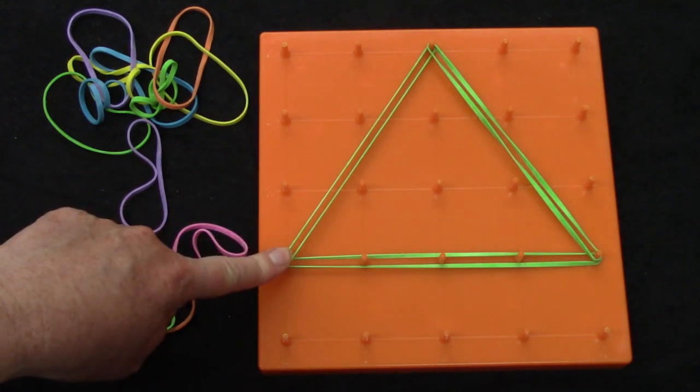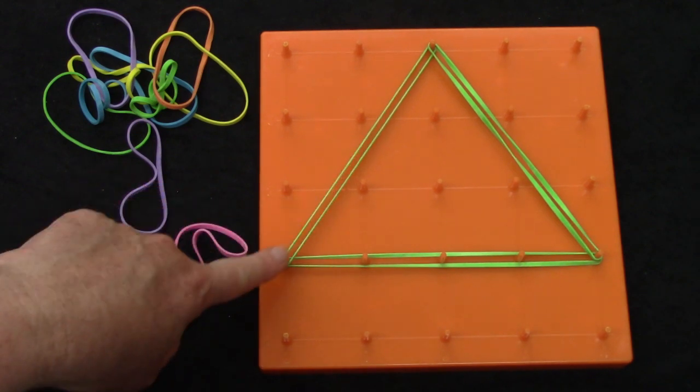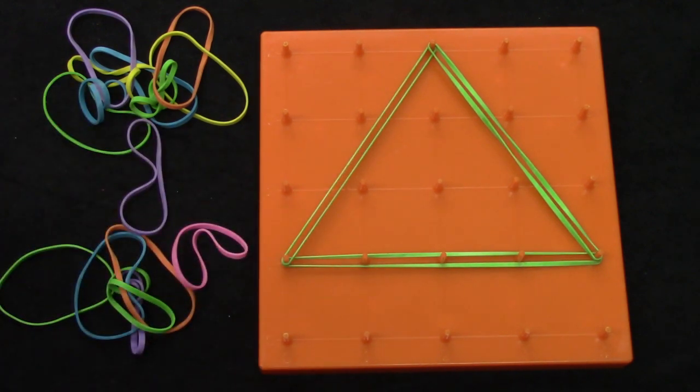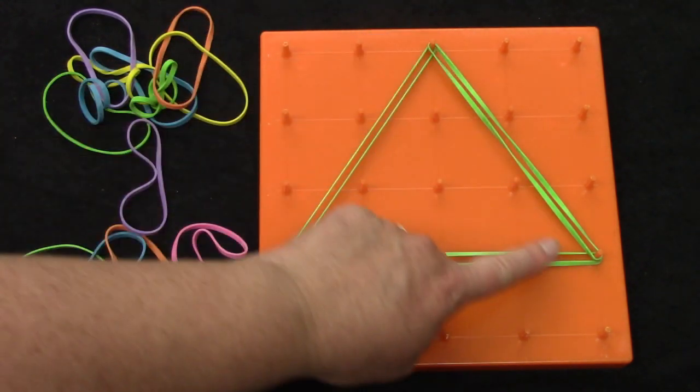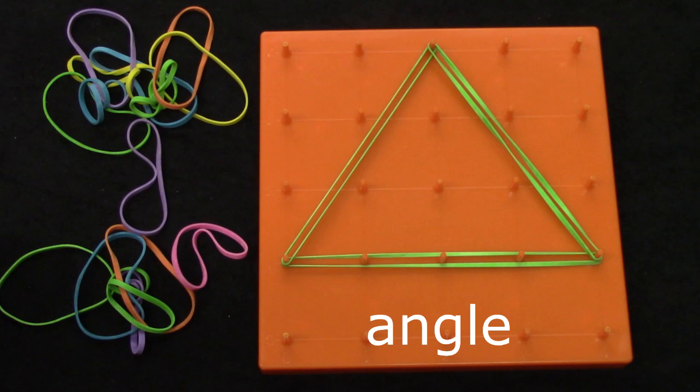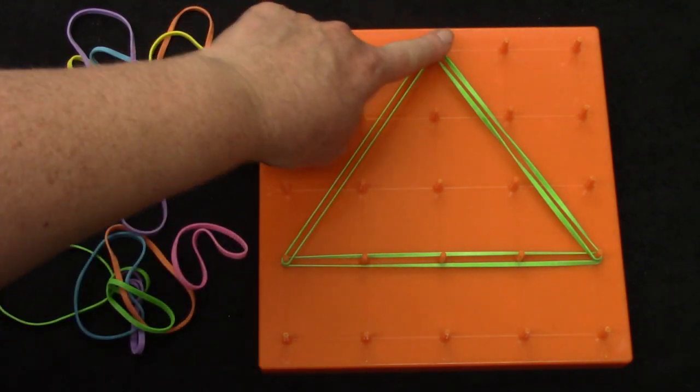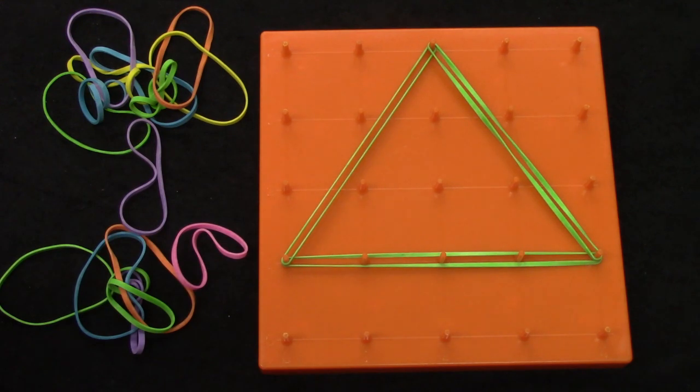What do we call the point where the two sides meet? Some people call it a corner but a mathematician calls these points angles. A triangle has one, two, three angles just as it has three sides.